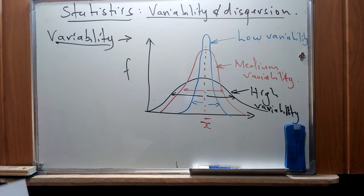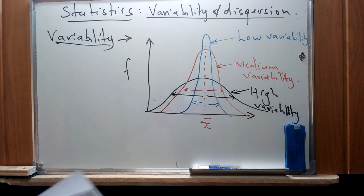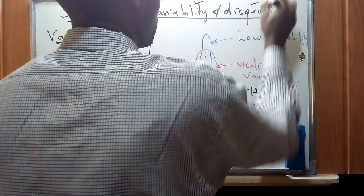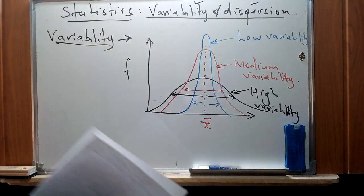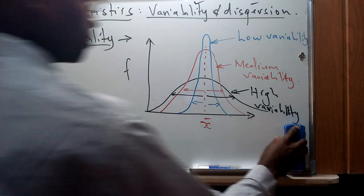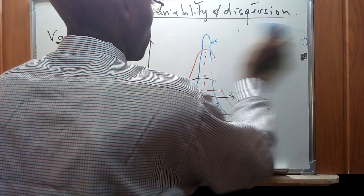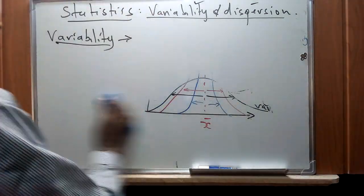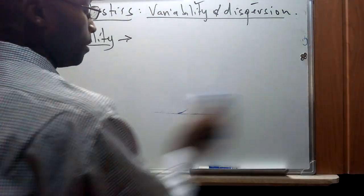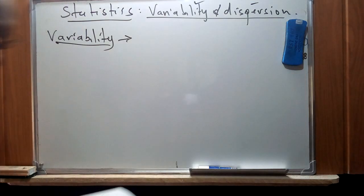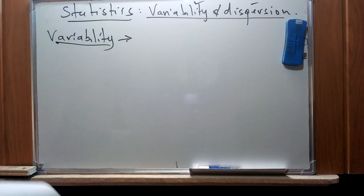Going forward, we have talked about the concept of variability. We will also look at the second concept, dispersion, and these two are going to assist us in figuring out how we can find the mean absolute deviation. I am also going to use a graph to illustrate dispersion.